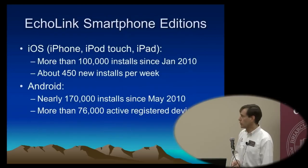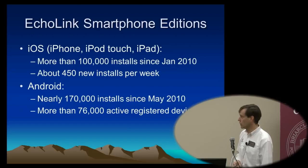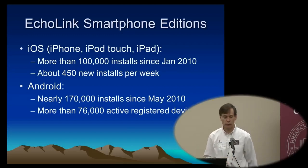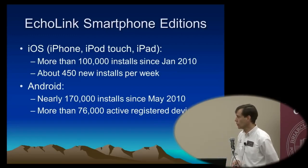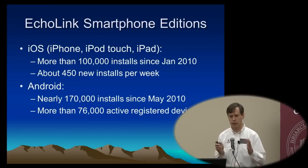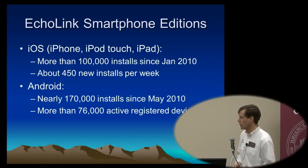The smartphone editions have been downloading pretty rapidly — about 450 new installs per week of the iOS version, and that's been going on for several years now. And nearly 170,000 installs for the Android version, with about 76,000 currently active. Android will keep track of things that are uninstalled, so I can know that, at this moment, there are about 76,000 copies in the wild.